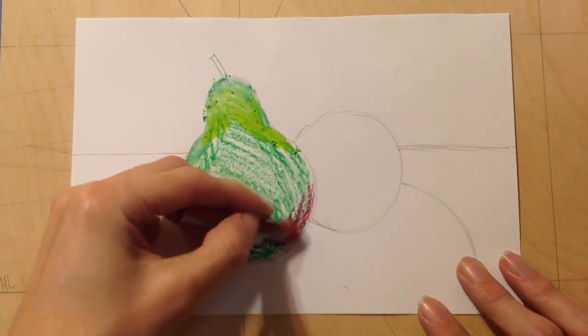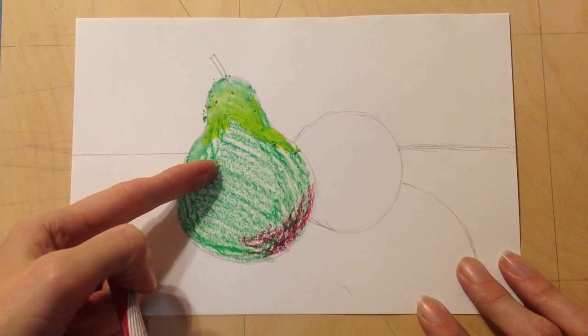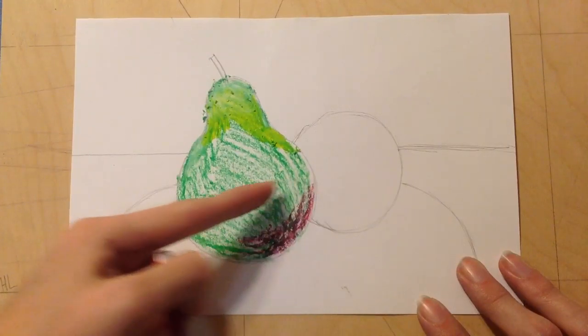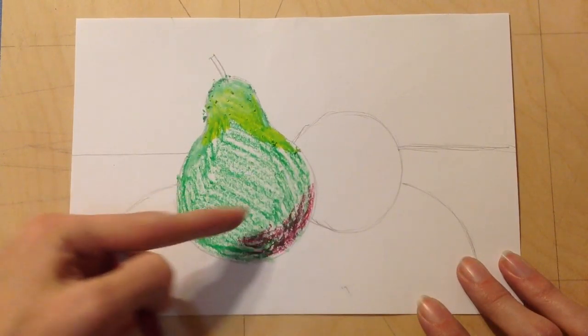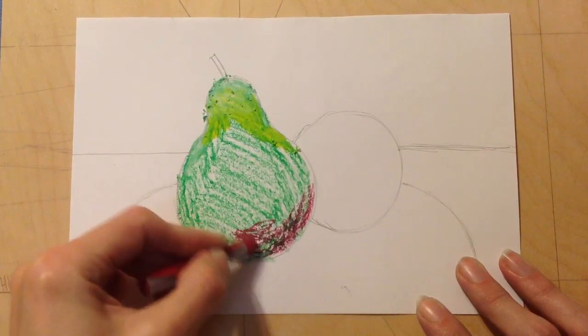Remember the sphere on the other side of the page, it's round, and so is this piece of fruit. So, when I shade, I'm not going to shade a stripe like this, I'm going to shade it round.